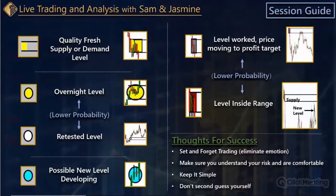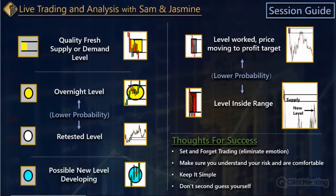Let's skip down to the blue one on the bottom. The blue one is a level that's possibly developing. Typically that level, if it does develop, will become a yellow box — almost always.